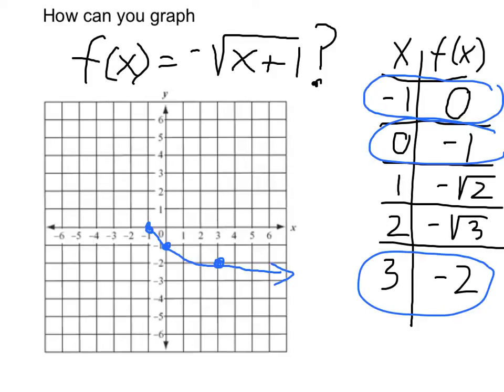Now any graph of a square root is going to be some kind of transformation of what we call the parent square root function. So let's take a look at that for a second and compare it. Here's a representation of what we call the parent square root function. f(x) is simply square root of x. It's basically the most simple type of square root function that you could have.